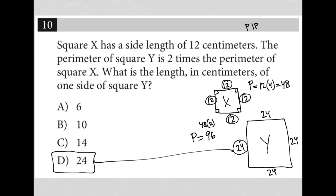And then I would have said, well, if the perimeter of square Y is 96, then what is 96 divided by 4, and we would have found that that is equal to 24, right, which is how we get there.